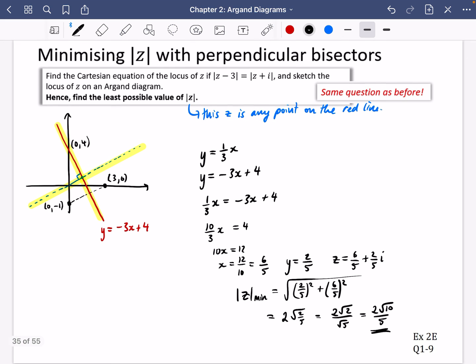So just to think to yourself, if you're ever trying to minimize one of these distances, it's always going to be something to do with perpendicular. Pretty straightforward question here. There are some more complicated ones in the exercise. So I would say at this point is a good place to pause.